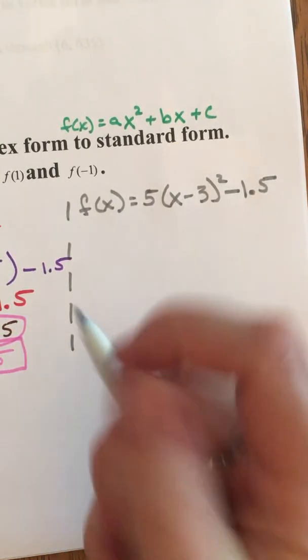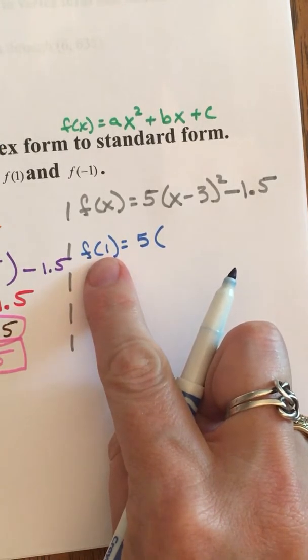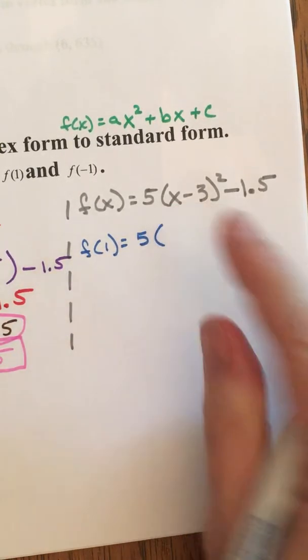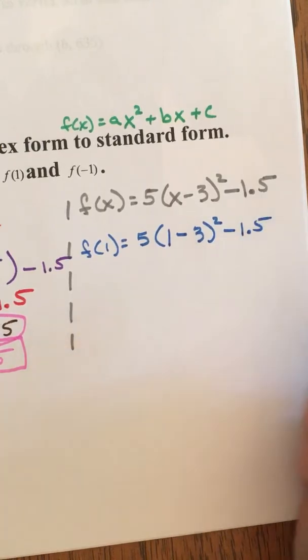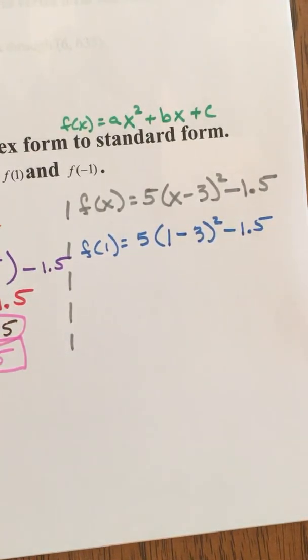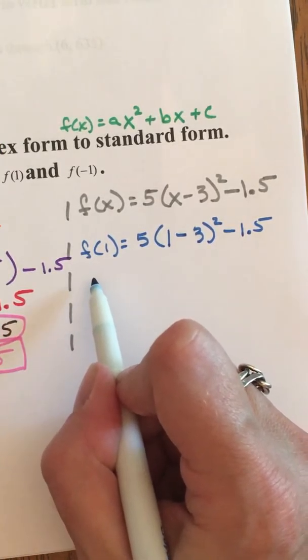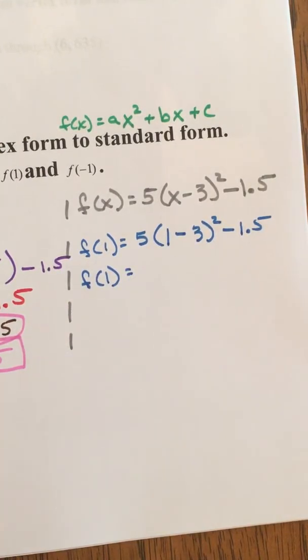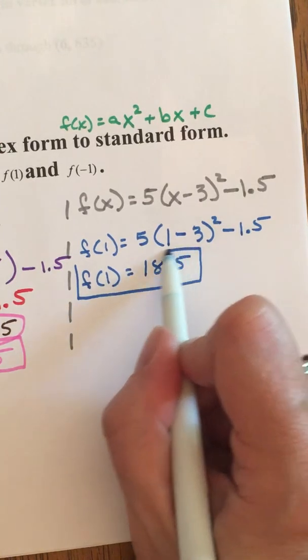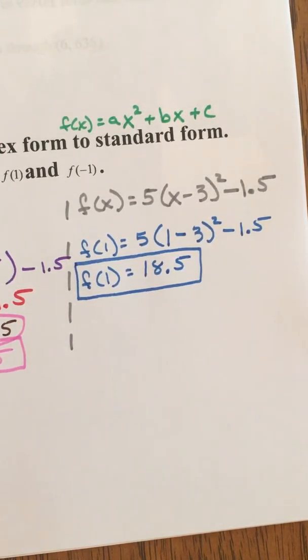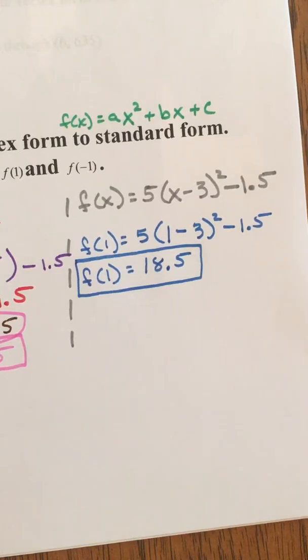Let's check out f of 1. It will be 5 and this 1 will replace that x right there 1 minus 3 squared minus 1.5 all right so if you put that in your calculator type it in get an answer push pause and get your answer. Did you get 18.5? I sure hope so. If you did nice job you did it right. You could have used the standard form also and you'd get the exact same answer isn't that neat you should try it.